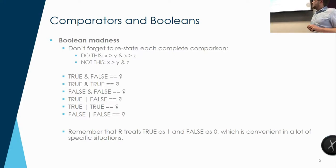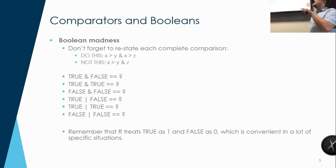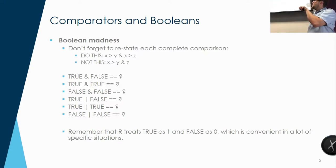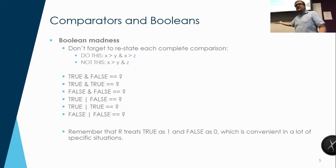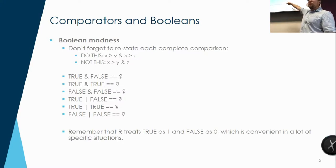Remember that R treats true as 1 and false as 0. When we look at 'x greater than y AND z,' z gets evaluated on its own as a logical term. Any value that exists — which is really what true means — becomes true, and 0 becomes false.